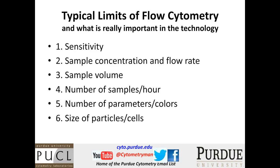Fifth is the number of parameters and colors. Many instruments are now coming to market in the range of 5 to 15 parameters, which seems to be a popular range — we've developed good assays where we can look at a vast number of parameters with a fairly small number of cells. Sixth and last is the size of particles — looking at very small or very large particles is a tough challenge for a lot of flow cytometers, and I anticipate we'll be looking more at that area.